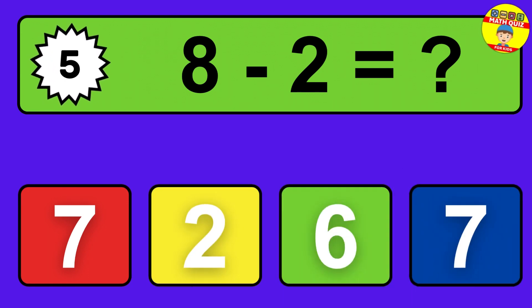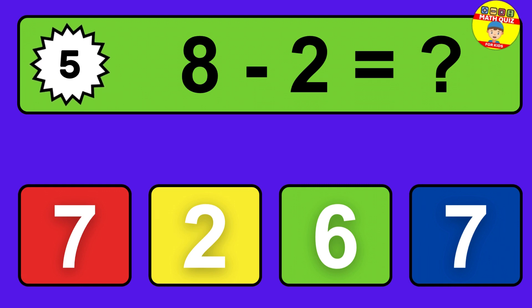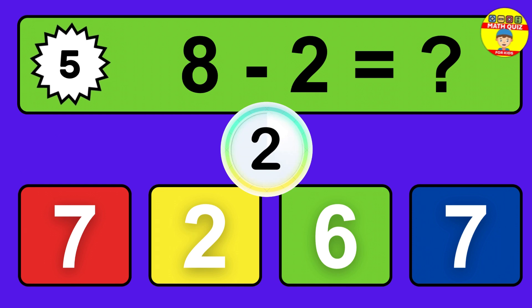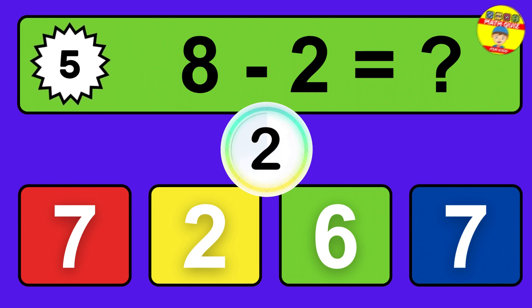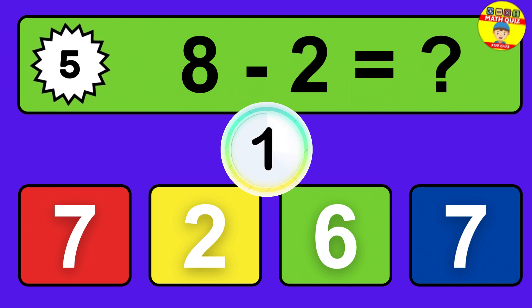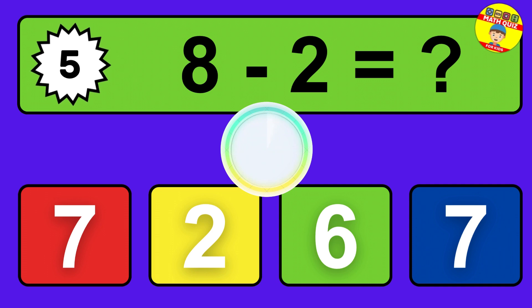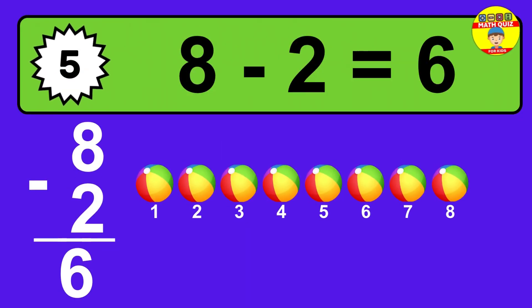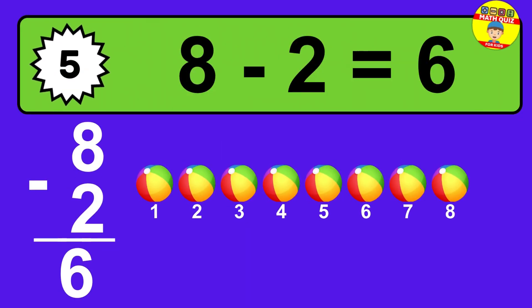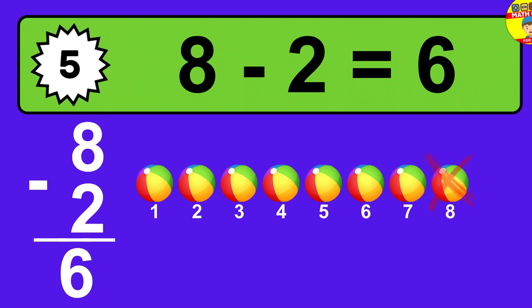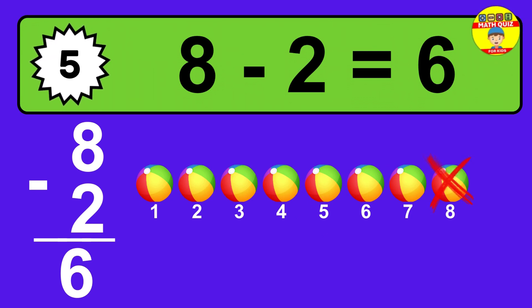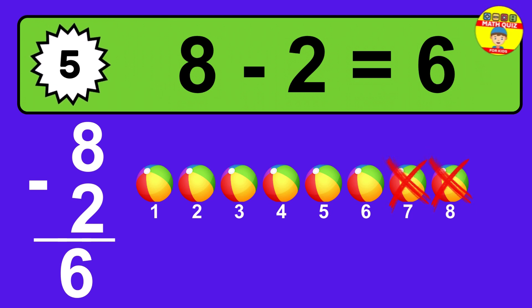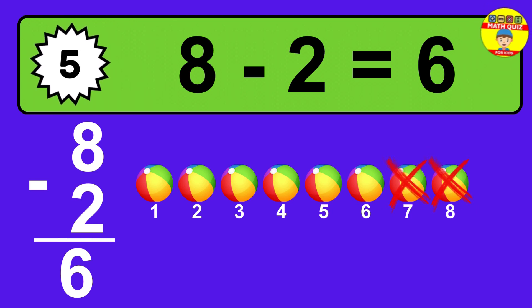Question five: eight minus two equals what? The answer is eight minus two is six. Let's count it. One, two, three, four, five, six.